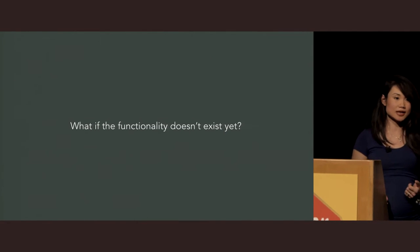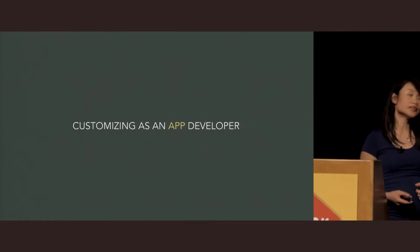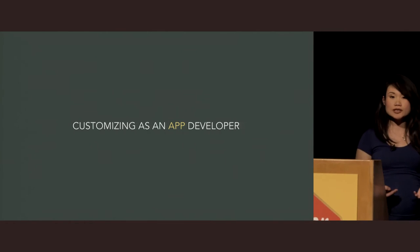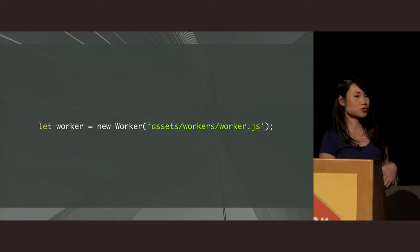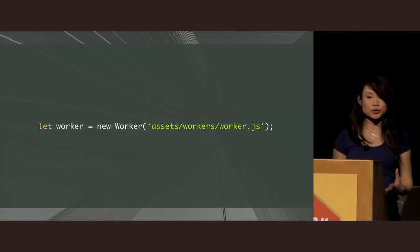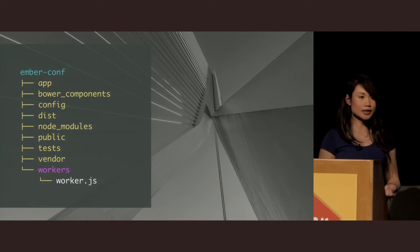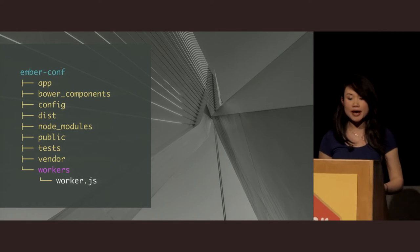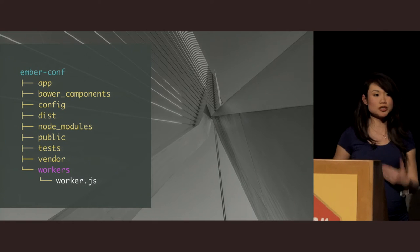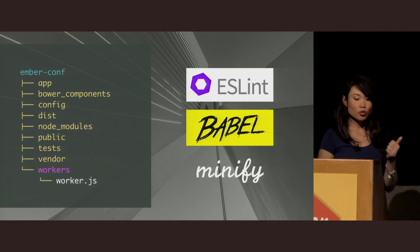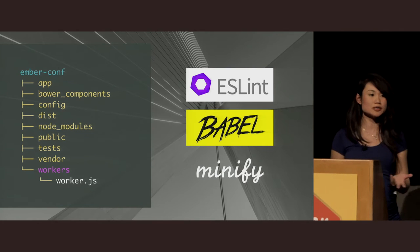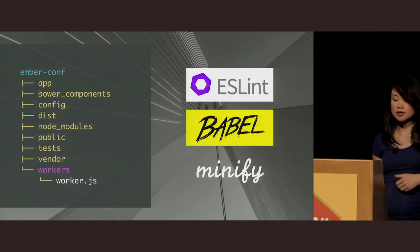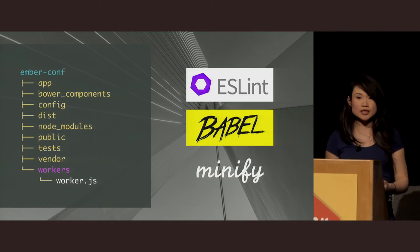But what if the functionality doesn't exist yet? Let me give you an example. Let's say that you're building an app, and you realize that for performance reasons, you could really benefit from using Web Workers. Web Workers have to sort of live on their own — they don't really get concatenated with the application code. You could create a workers directory to house the Web Worker code, but the problem is that Ember CLI isn't aware of this directory at all. How do you tell it that you want this code to be included in the build? What if you also want it to lint the worker code or write it with the latest ES syntax and have it transpiled using Babel, or even minify the code? Somehow you're going to have to configure the Ember CLI build to do this.